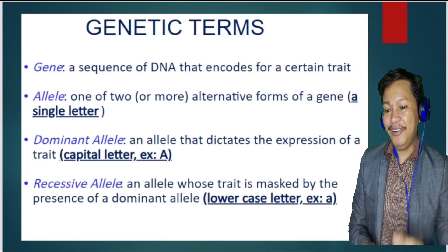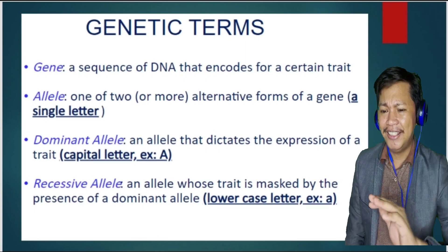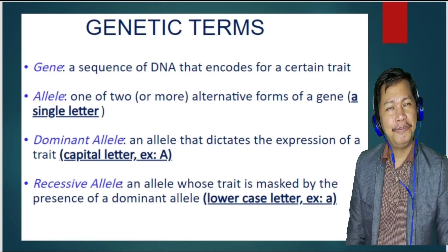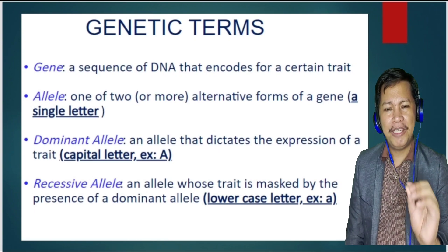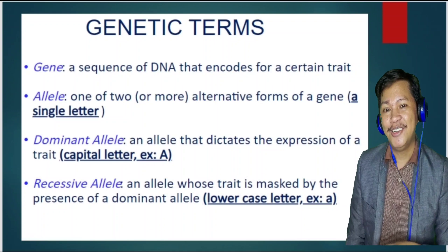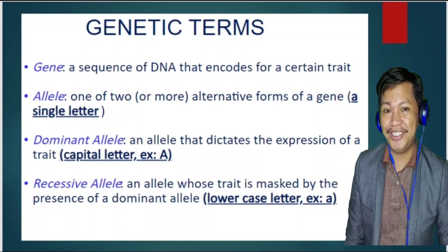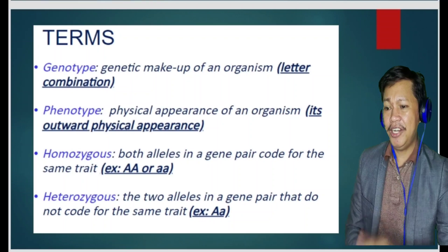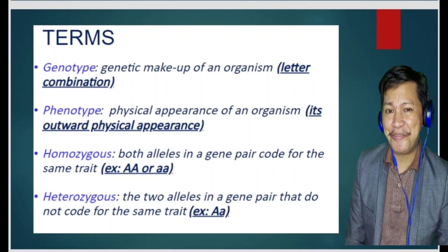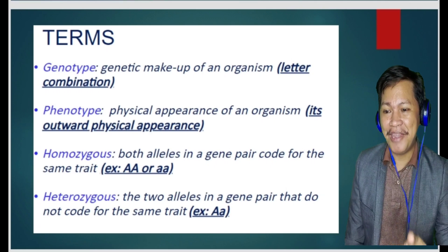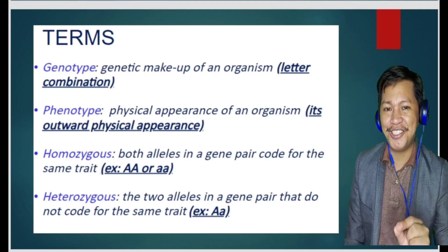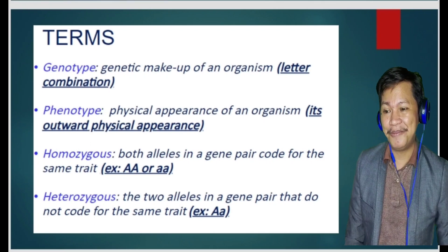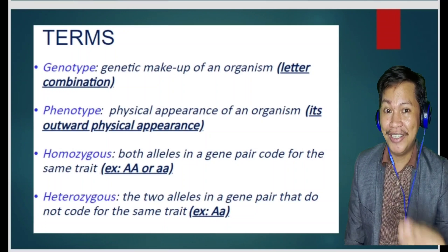A recessive allele is one whose trait is masked by the presence of the dominant allele, written in a lowercase letter. For example, traits like short height, curly hair, or dimples that don't strongly manifest in offspring may be recessive traits from parents. Genotype is the genetic makeup of an organism — a letter combination. Phenotype is the physical appearance of an organism — its outward, visible characteristics.